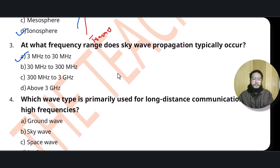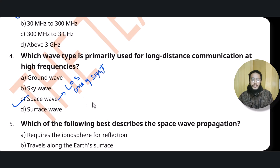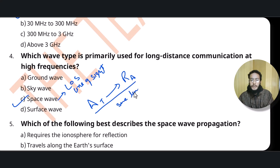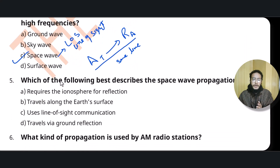The fourth question: which wave type is primarily used for long distance communication at high frequencies? You should remember it is space wave — also known as LOS, or line of sight communication. For long distance communication at high frequencies, we use space wave propagation.